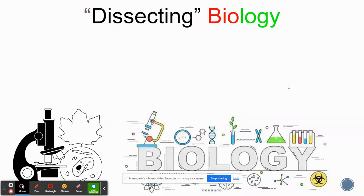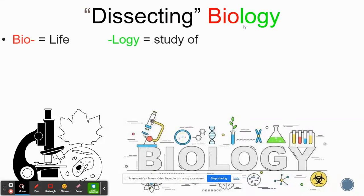One very important skill when studying science, and especially biology, is being able to understand the definition of different words. Biology has a lot of terminology. One common way to avoid having to memorize too much is to dissect the word. Biology has two parts: bio and logi. The bio part means living, and the logi part means study of. So when we study biology, we are studying life — biology is the study of living things.